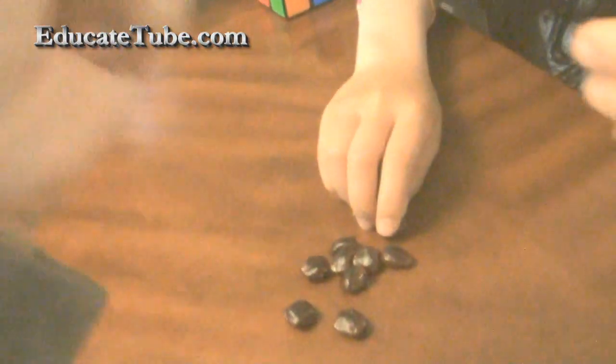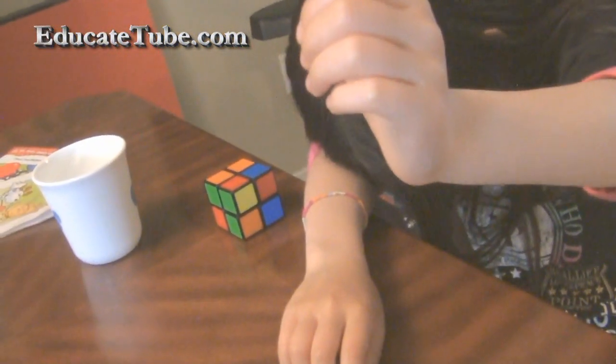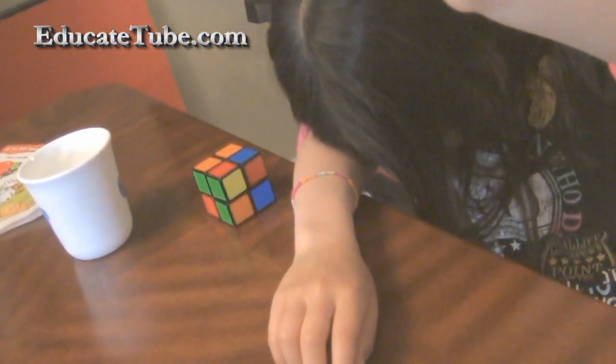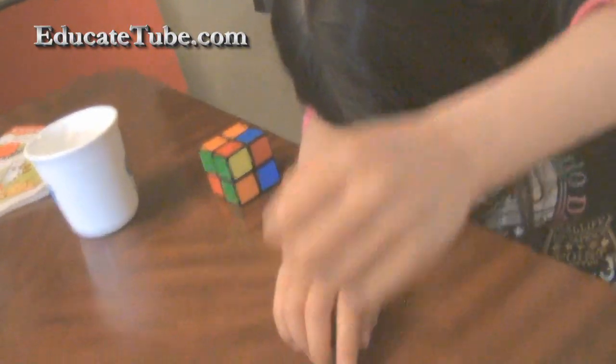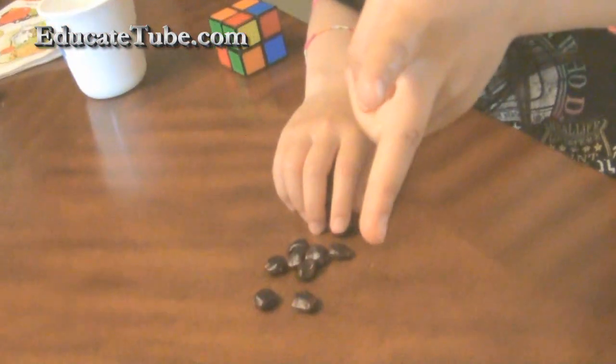Rock, paper, scissor. Let's see who's going first. Rock, paper, scissor. Okay, I lost. So my daughter's going first.